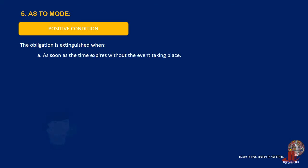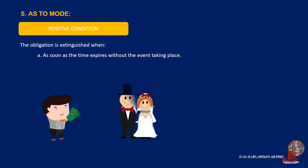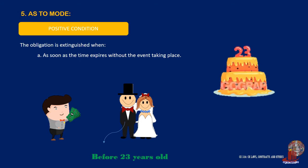Let's take an example. Rob obliges himself to give Bert a sum of money if Bert will marry Charisse before Bert reaches the age of 23. Rob is liable if Bert marries Charisse before he reaches the age of 23. However, Rob is not liable if Bert marries Charisse at the age of 23 or after. In this case, the time specified — before reaching the age of 23 — has expired without the condition of marrying Charisse being fulfilled. The obligation is extinguished as soon as Bert becomes 23 years old.